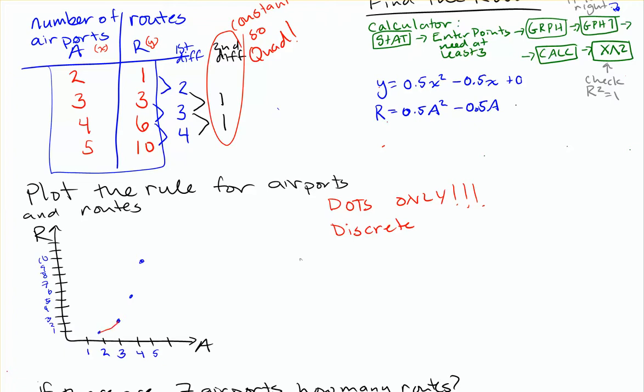Again, if I had a line in between here, that could say that I could have 2.5 routes. So that means that I've got an airplane that didn't actually make it to the city it was supposed to go to. So connecting with a line would be incorrect. We want to keep it as dots only. And this is, again, discrete because we can only have full routes. No half routes there.